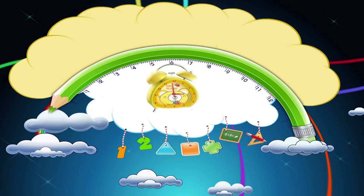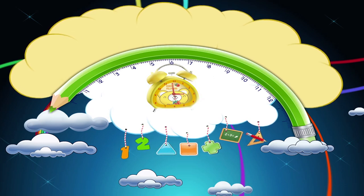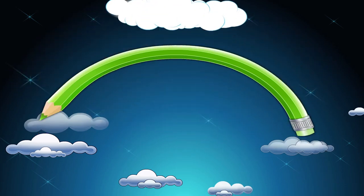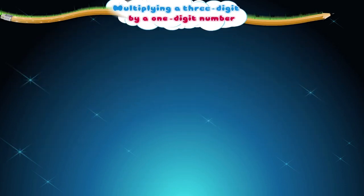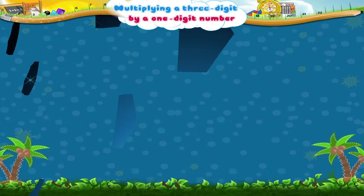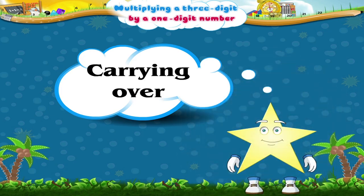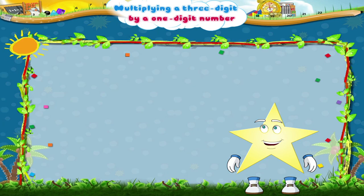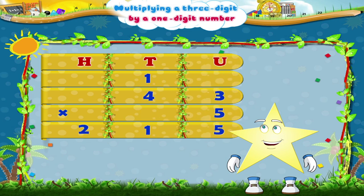Today we are multiplying a three-digit number by a one-digit number. Starry, do you remember what carrying over is? We learnt about it when multiplying two-digit numbers.